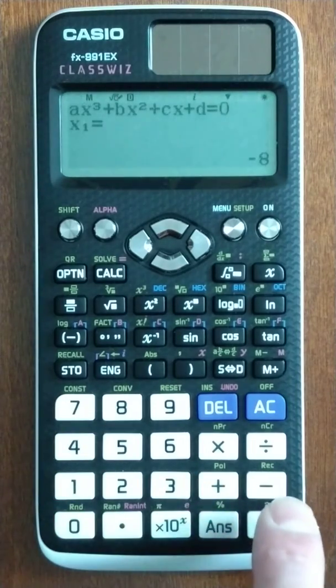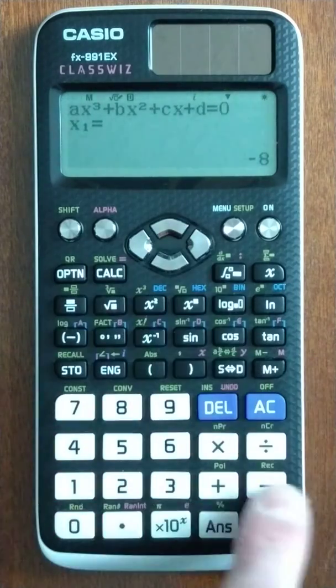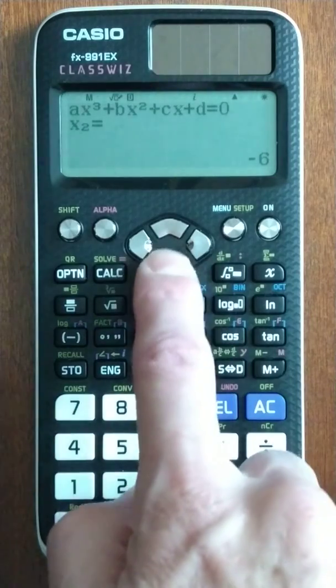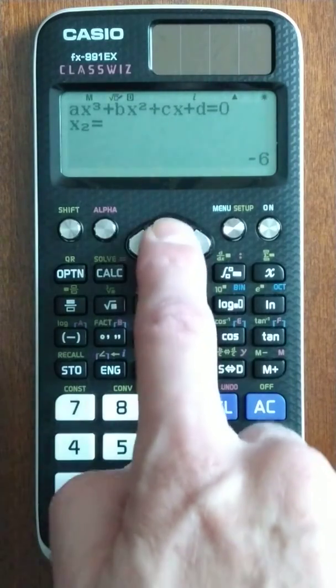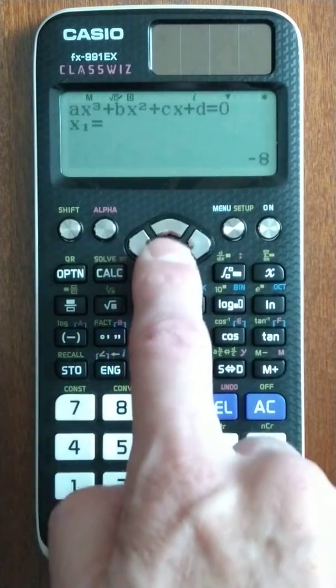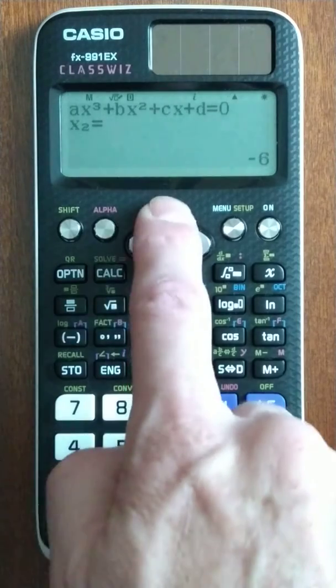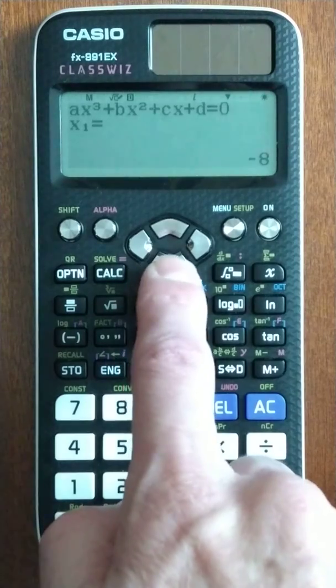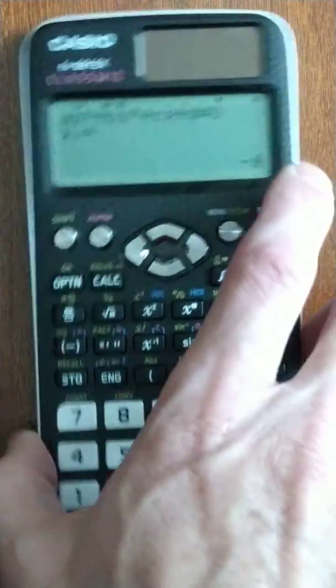We hit equal again, it says x1 is negative 8. If we hit equal again or hit the down arrow, x2 is negative 6, and our third root... huh, how odd, it doesn't list the third root, it just gives you two roots. It's because one of those is a double root, but you don't know which one on the Casio. Womp womp.